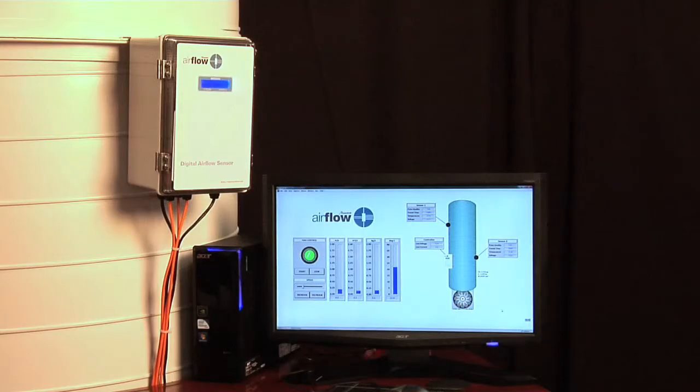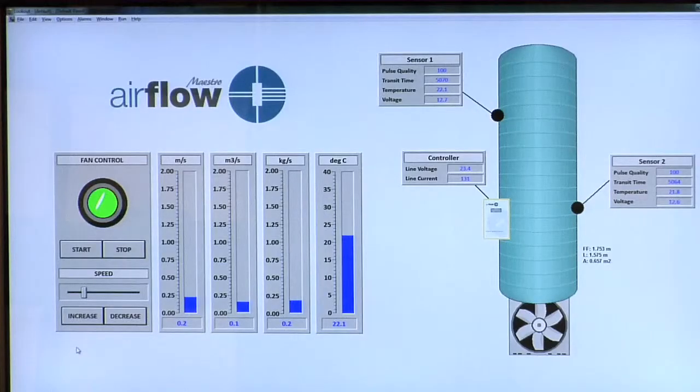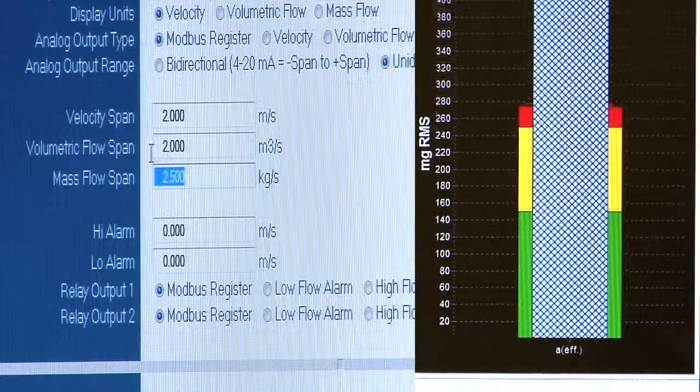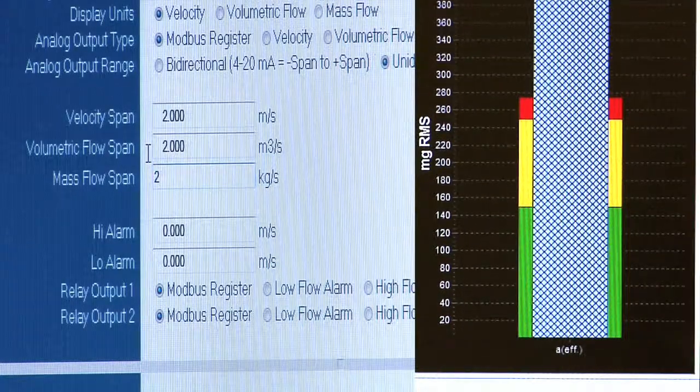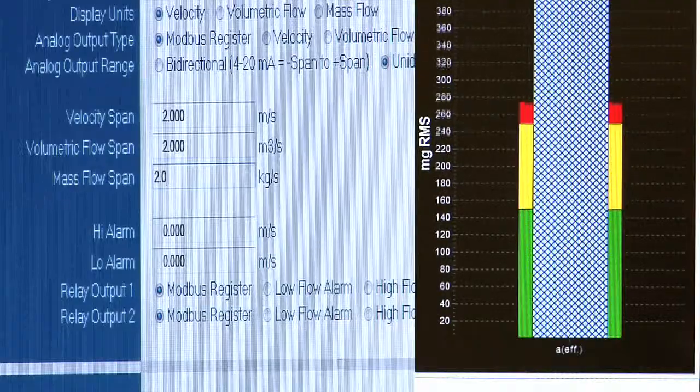Whether it is an underground drift, primary fan, or auxiliary fan application, Maestro has the complete solution. The system can be easily installed in either conventional leaky feeder or Ethernet-based networks.